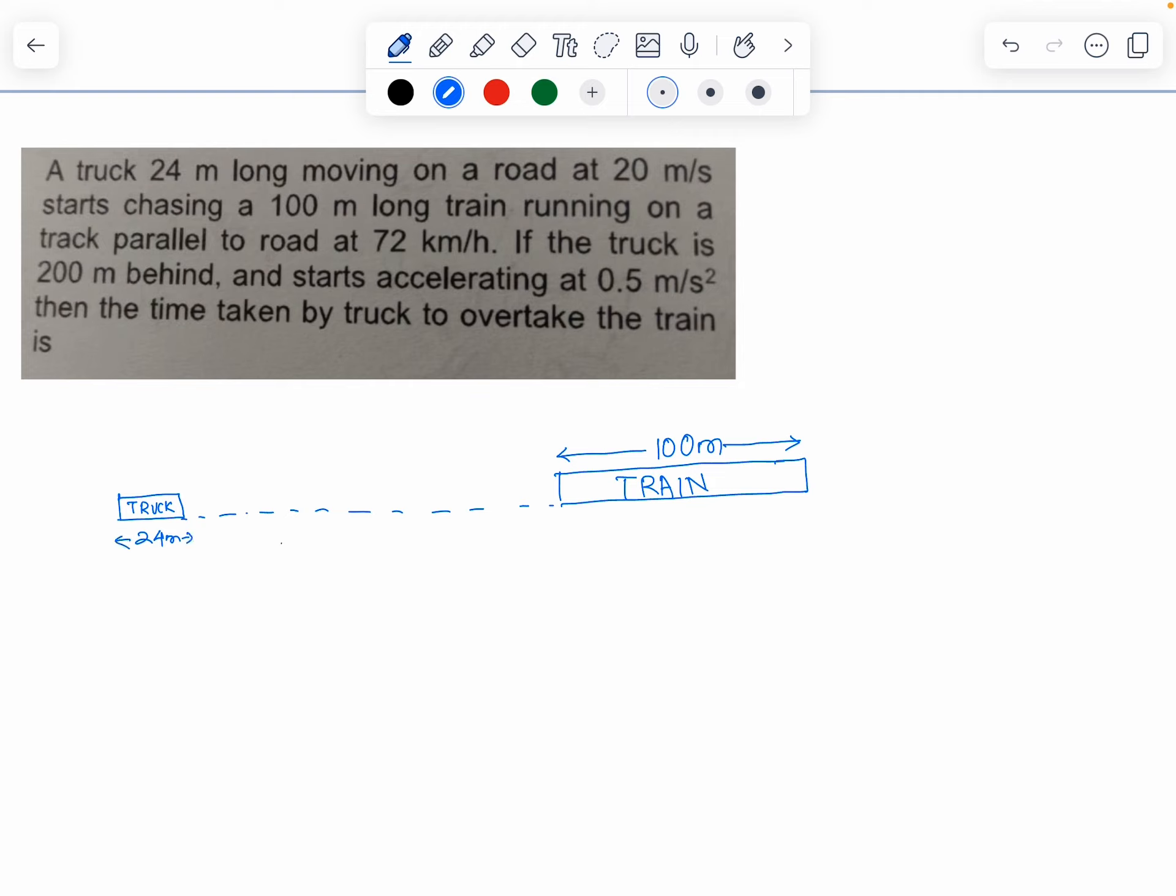And the initial distance is 200 meters. The train's speed is 72 kilometers per hour, which is 20 meters per second.